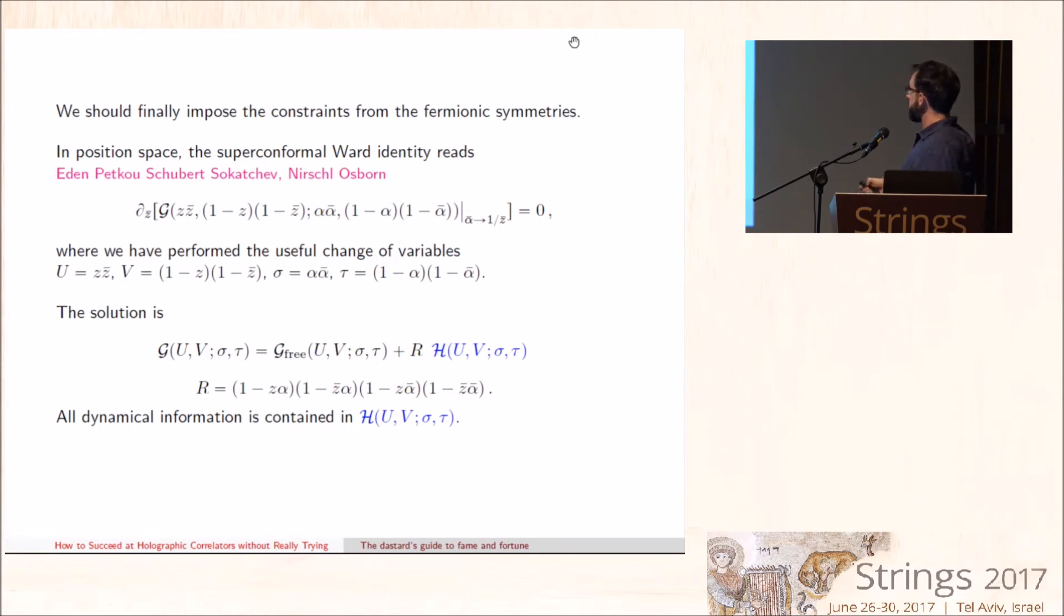And then a piece, which you see by construction, obeys the constraint that it should vanish when ᾱ = 1/Z̄. In fact, by symmetry, also when Z = 1/α, et cetera, this should be true. And so this takes into account that property. And of course, there is some boundary condition on this dynamical function H, such that if I set Z̄ equal 1/ᾱ, this does not develop a pole that cancels the zero. So there is some regularity property on H, otherwise it would be an empty statement, but this is the complete solution of the Ward identity.